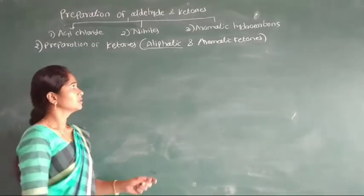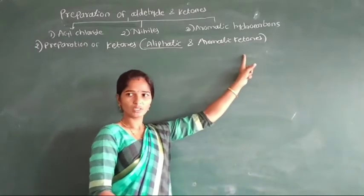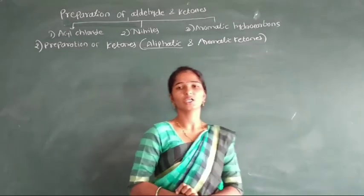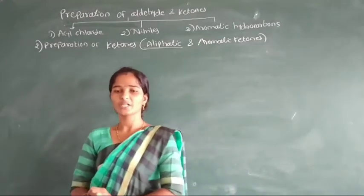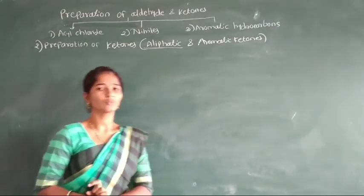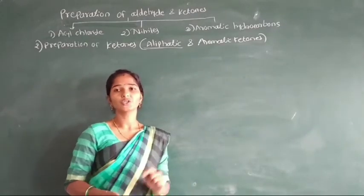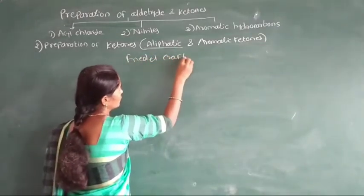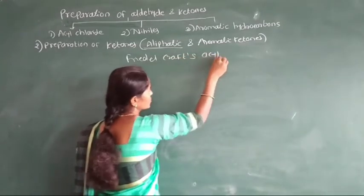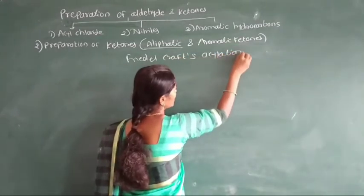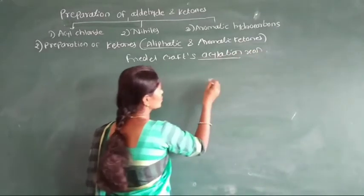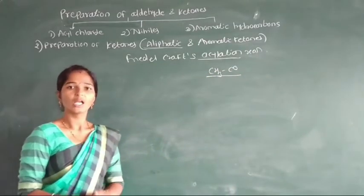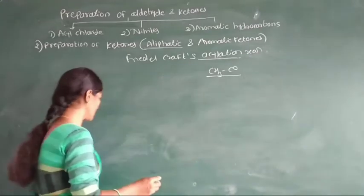Now, second, preparation of aromatic ketones from acyl chloride. Aromatic ketones contain at least one benzene ring. This aromatic ketone is prepared from acyl chloride by the Friedel-Crafts acylation reaction. In this reaction, addition of an acyl group, such as CH3CO, to the benzene ring occurs, giving formation of aromatic ketones.